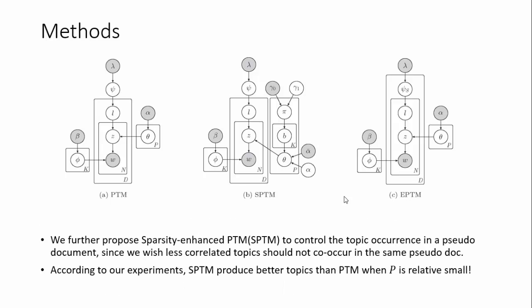We further propose SPTM to control the topic occurrence in our particular document. According to experiments, SPTM produces better topics than PTM when P is relatively small, since unrelated topics co-occur more often in a pseudo document.